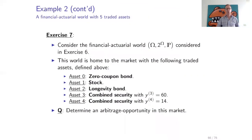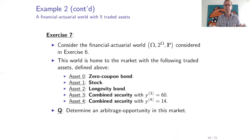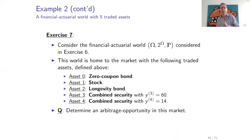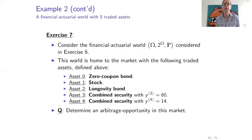Now let us go to the last exercise — exercise seven — which uses the full setting of exercise six with all assets 0, 1, 2, 3, 4. But now the combined security has price y3 equal to 60. Since the price had to be in the interval (0, 30), a price of 60 means there does not exist an equivalent martingale measure — there must exist an arbitrage opportunity. The question is to determine an arbitrage opportunity in this market.